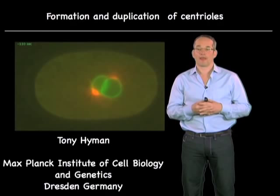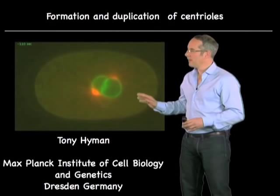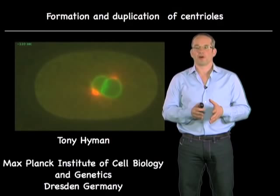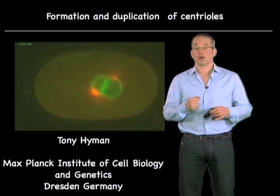One of the things that strikes one when one looks at a movie like this is the spindle itself has two poles. You have a pole here, the red, and you have another pole over here. That's at the heart of all cell division, because the chromosomes, when they divide, go to these different poles. You have to have two poles in order for the chromosomes to segregate into two masses. So you can ask the question: why are there two poles?